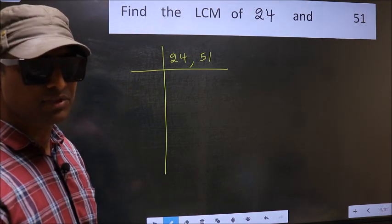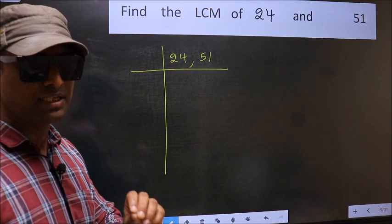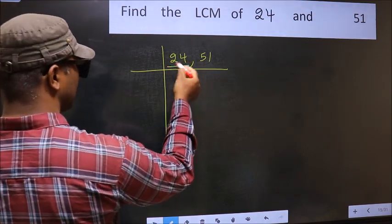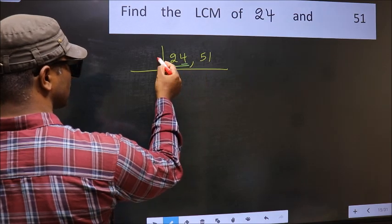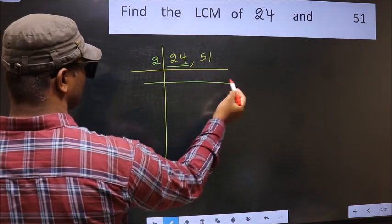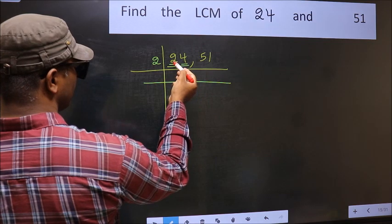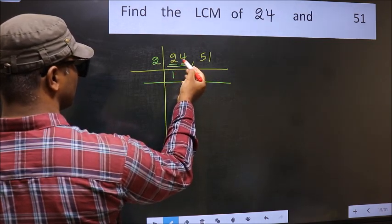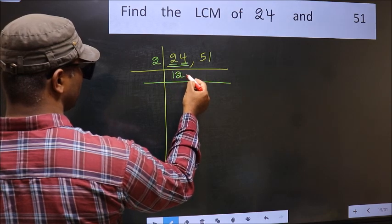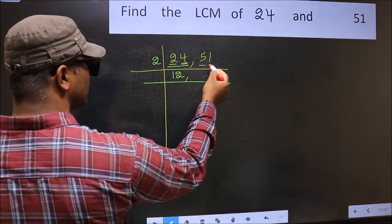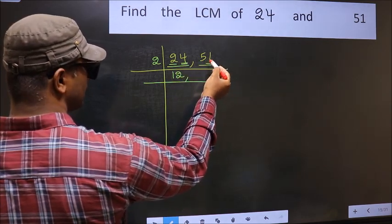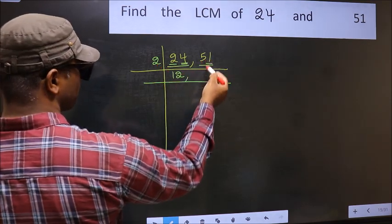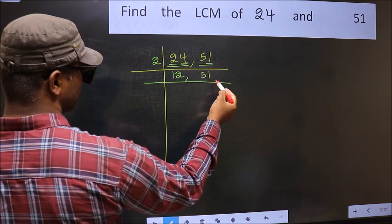Now focus on the first number, which is 24. The last digit is 4, so it's even — take 2. First number: 2 ones are 2. The other number 4: 2 twos are 4. The other number is 51; last digit is 1, not even, so it is not divisible by 2. So you write it down as it is.